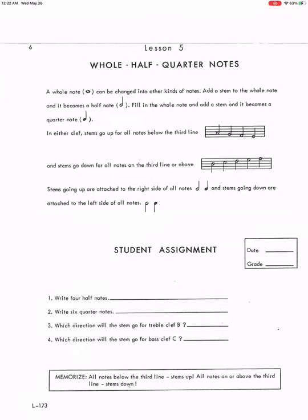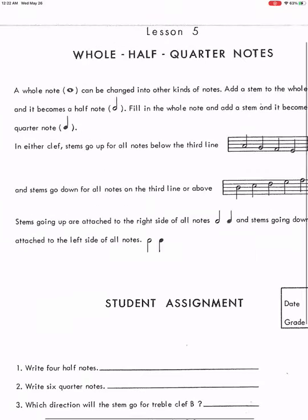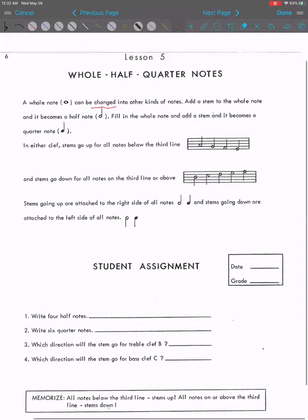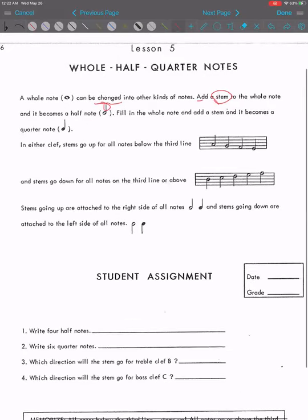A whole note is a donut looking note. It can be changed into other kinds of notes. For example, if you add a stem to the whole note, it becomes a half note. Fill in the whole note and add a stem and it becomes a quarter note.